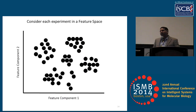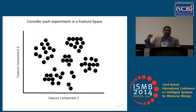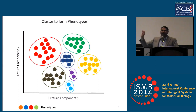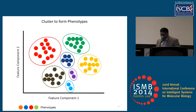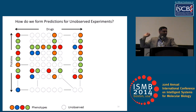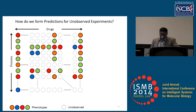Returning to the image-based screening example, suppose I've collected, as the inductive step, already several experiments' worth of data. These data are very high-dimensional — I'm showing here in this cartoon two dimensions of this feature space. What we do is we first cluster these to find or identify what the phenotypes are so far. Coming back to the experiment space, we have phenotypes for the observed experiments. The question now is, how do we form predictions for unmeasured combinations of drugs and proteins?